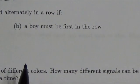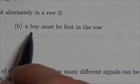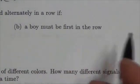Hi everybody, in this case we are being asked how many ways we can arrange a group of four boys and four girls if they've got to alternate. Then we're just going to add one other little restriction here that a boy must be first in the row.